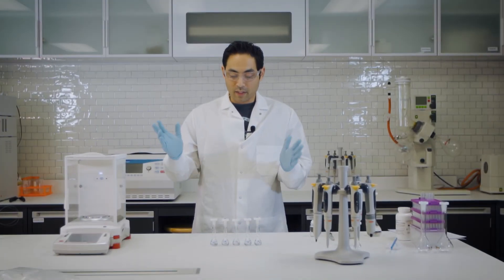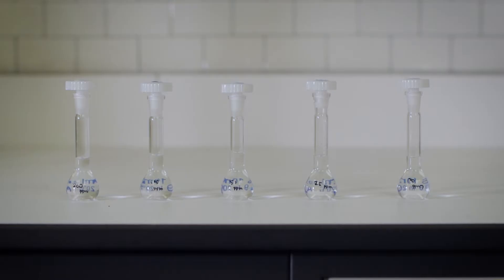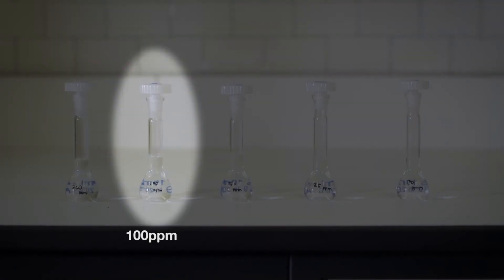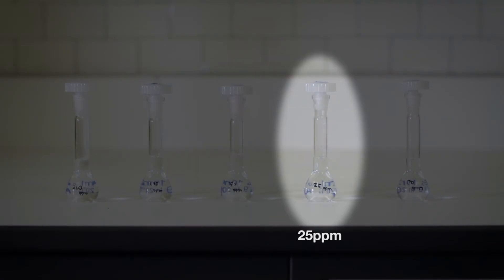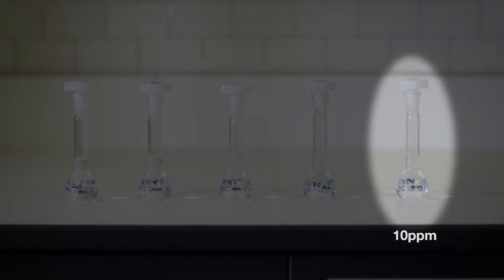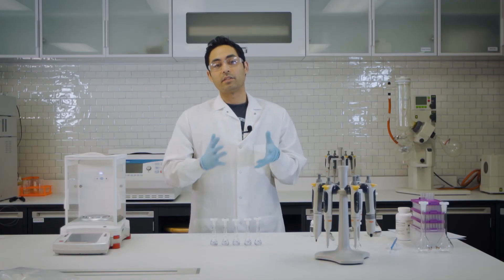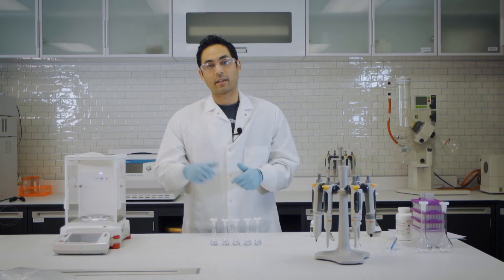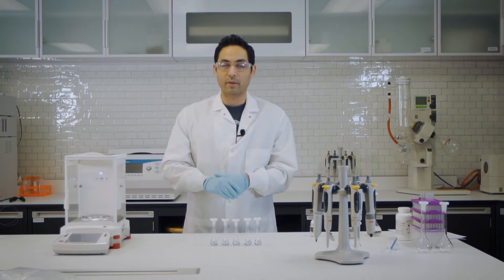Alright, so we finished the volumetric cal curve. I got my 200 ppm standard, 100 ppm standard, 50 ppm standard, 25 ppm standard, 10 ppm standard. So we're going to get all of this into vials and then we're going to inject it on the HPLC and then we'll see how we did.